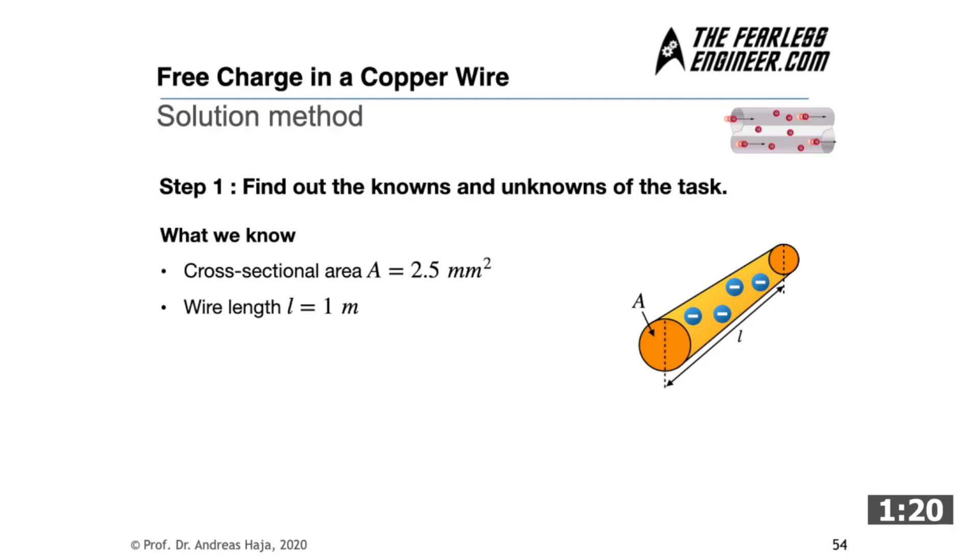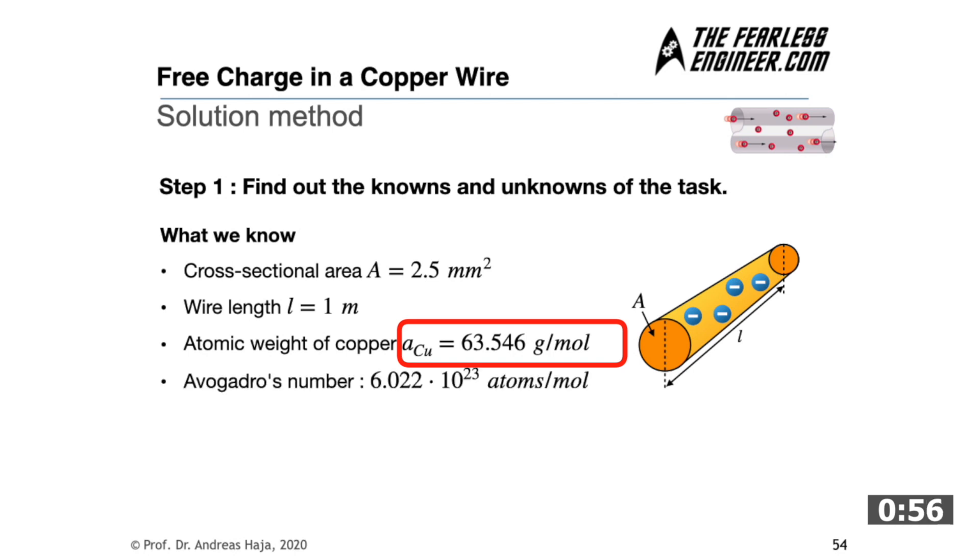And first we write down what we know about the conductor. We want to take a standard household installation cable as an example which usually has a cross-section of around 2.5 square millimeters. From the last video we already know some properties of copper and we know that we can find out the atomic weight of copper from the periodic table of elements. And if we look into it, we find that it is 63.546 grams per mole of copper. And as a quick reminder for you, one mole corresponds to about 6.022 times 10 to the power of 23 atoms. And also for this task we need the density of copper and according to Google this is 8.96 grams per cubic centimeter.